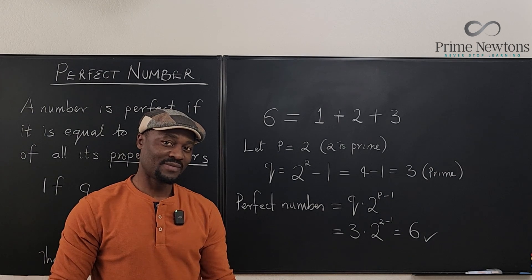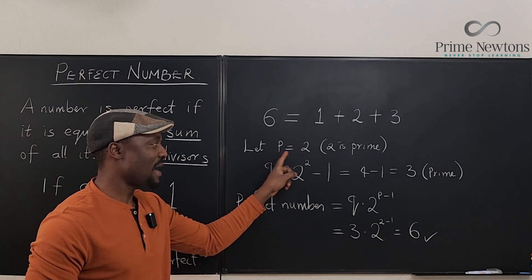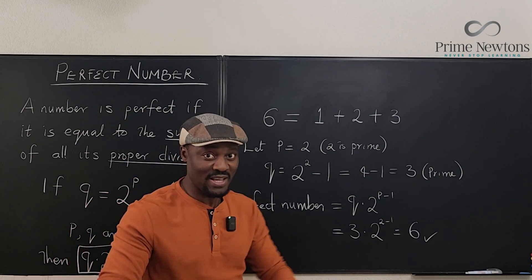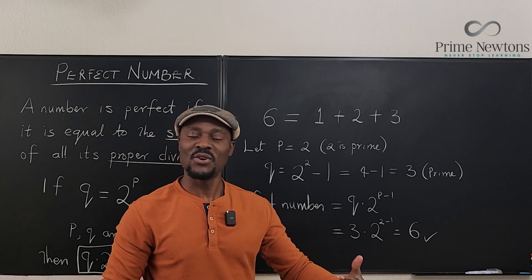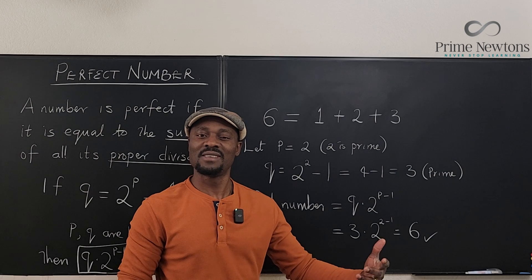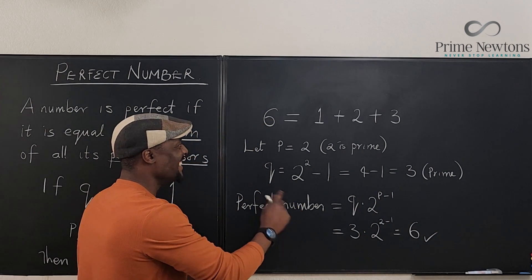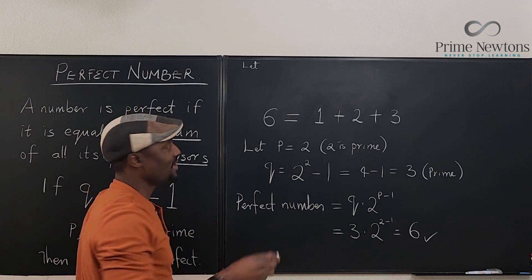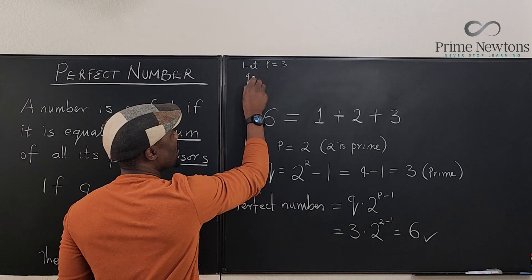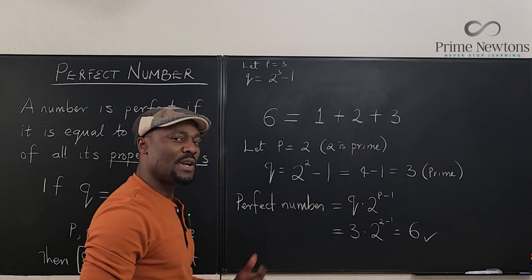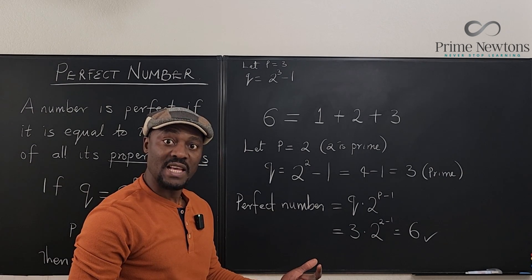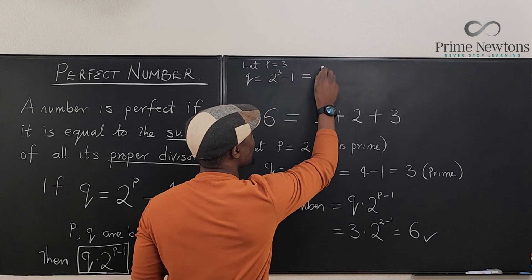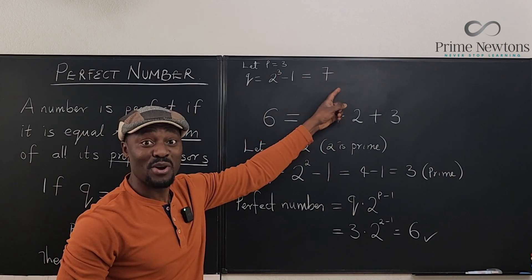Now move to the next prime number greater than 2, which is 3. Let p = 3. Then q = 2^3 − 1 = 8 − 1 = 7. Is 7 prime? Yes! So it works — q is prime and p is prime. We have the two ingredients needed to find the next perfect number.